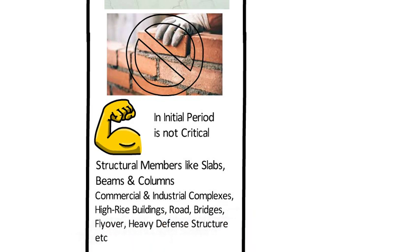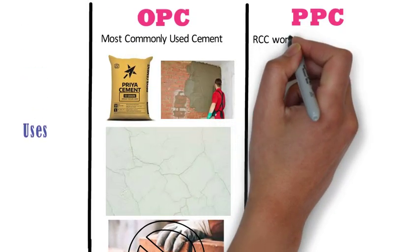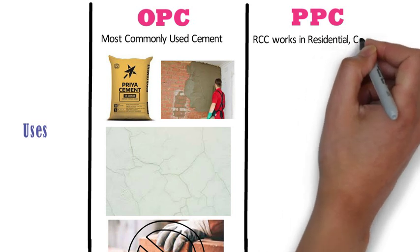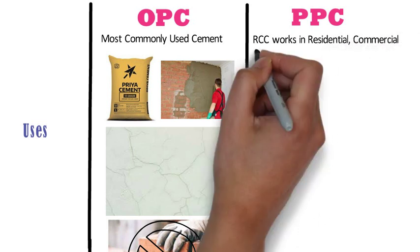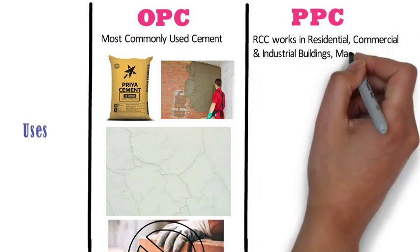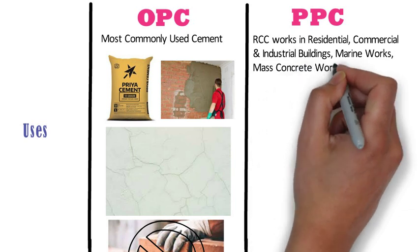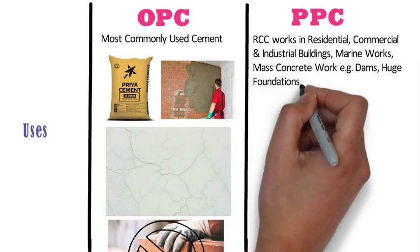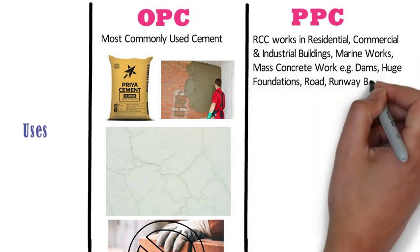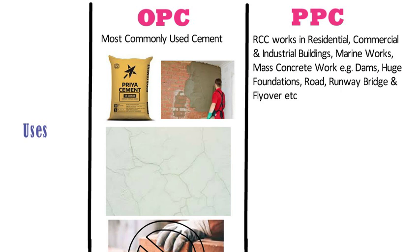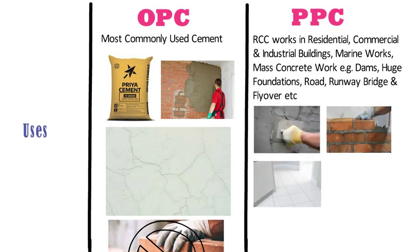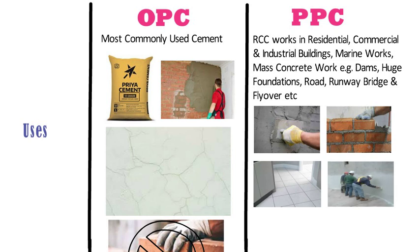PPC can be used in all types of construction works like RCC works in residential, commercial, and industrial buildings, marine works, mass concrete works like dams, huge foundations, roads, runways, bridges, and flyovers. Especially, PPC is used in plastering, masonry, tiling, and waterproofing works, as in these applications strength is not the major criteria.